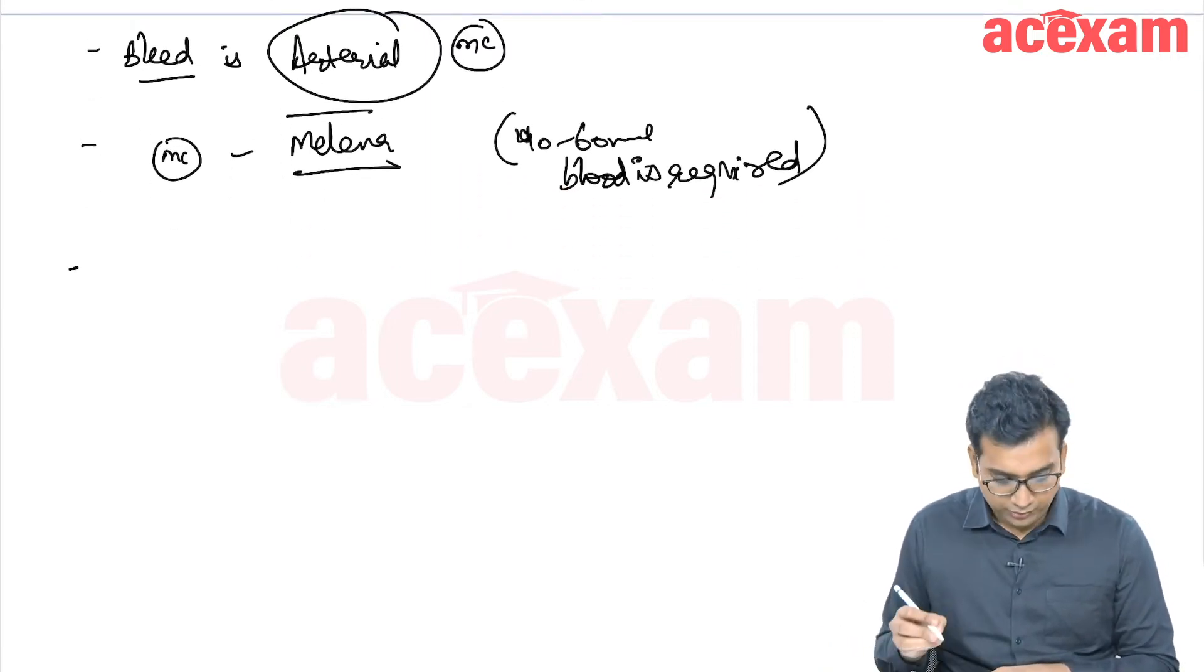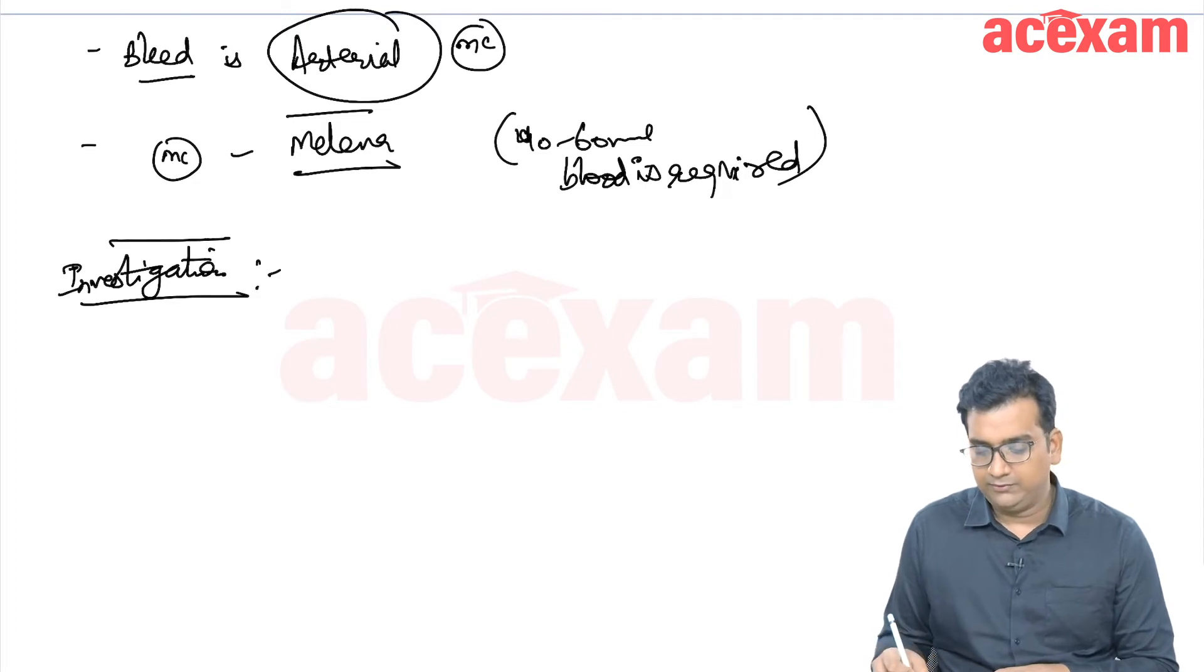How to, what is the investigation of choice? First investigation is any patient coming to us with GI bleed, we will first do a upper GI endoscopy.